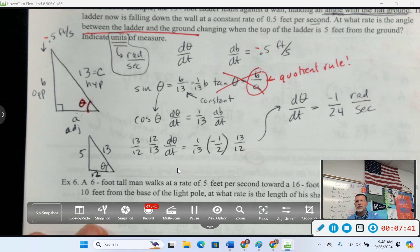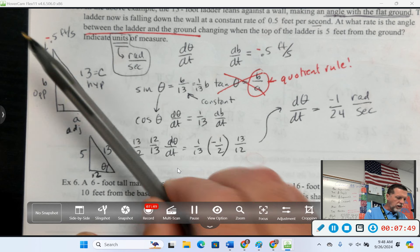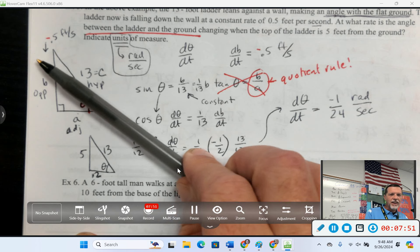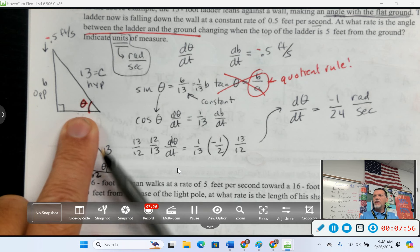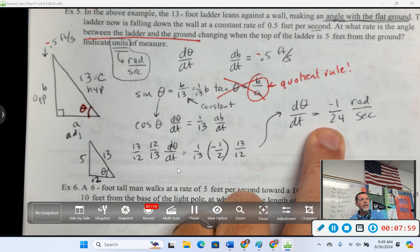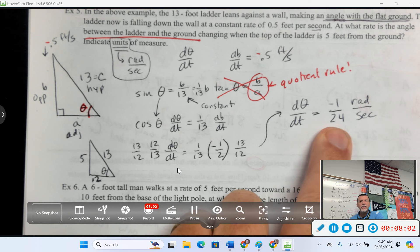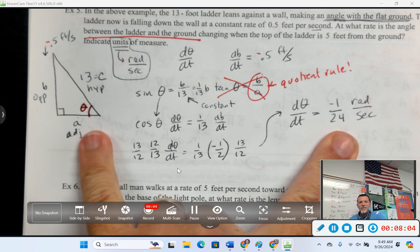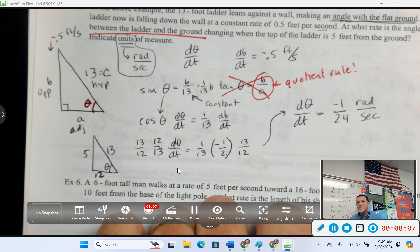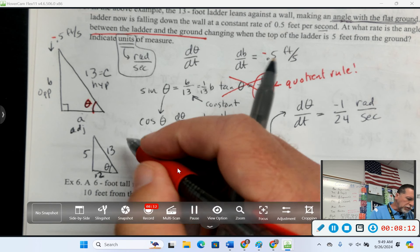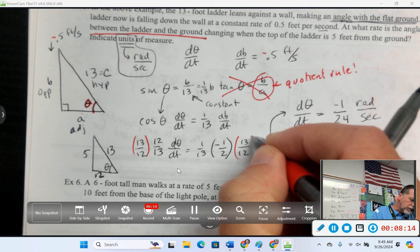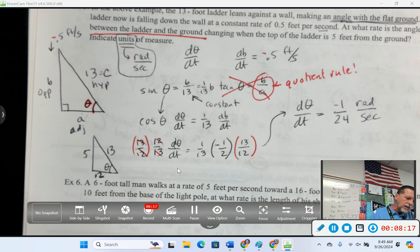Any time we get a negative, it doesn't mean it's wrong, but it probably means we need to stop and think and see if that makes sense. Given what's going on in our picture here, this ladder is sliding down, what's happening to our angle is getting smaller. So, it makes sense that this is negative. And so, don't be worried if you get a negative, but do see if it makes sense in the context of the problem. Austin? On the right side of the equation, how did you get 13 over 12? I multiplied both sides by 13 over 12, to get dθ/dt by itself.